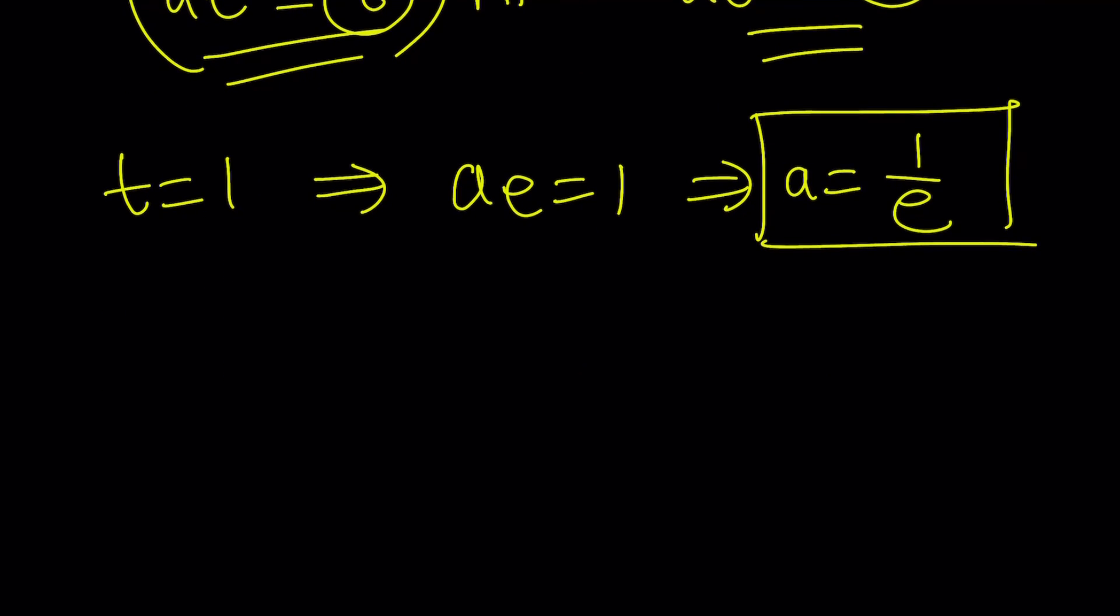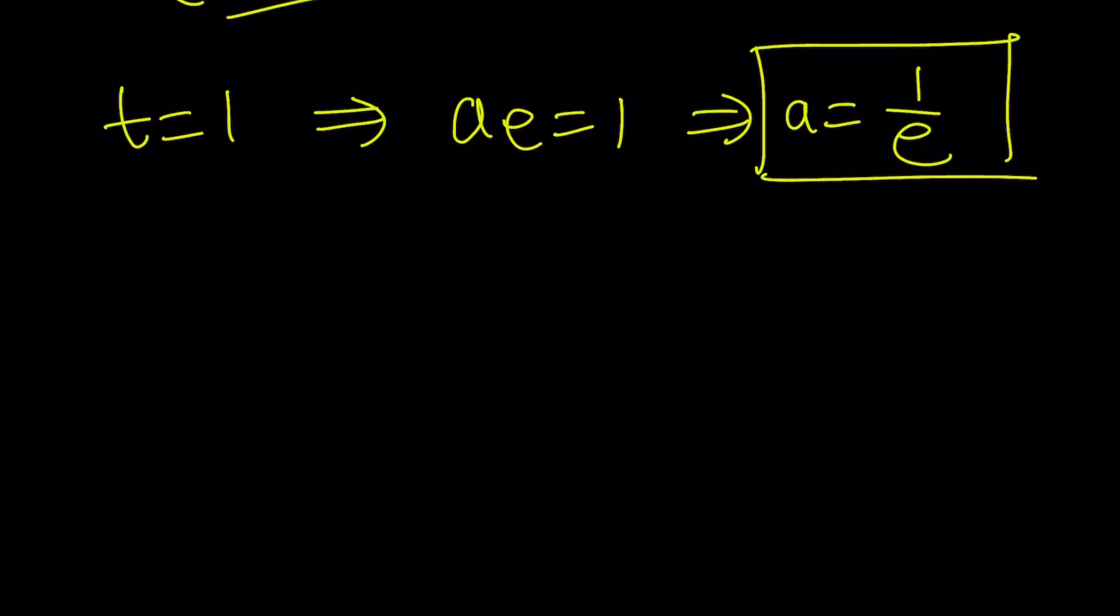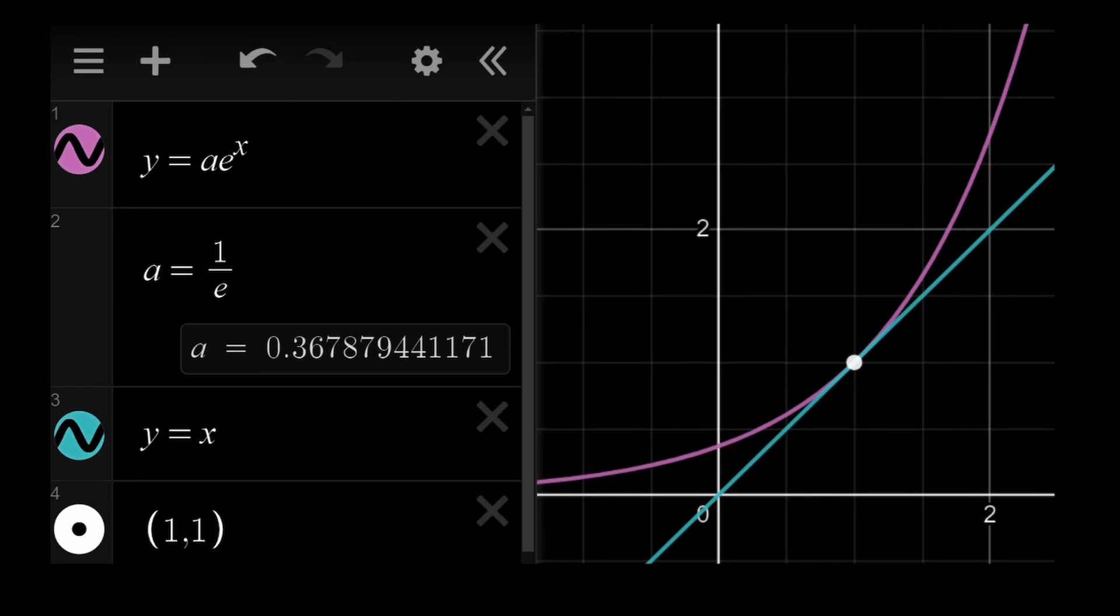So for a equals one over e, which is zero point three six, our graphs are going to be tangent. Let's go ahead and take a look at that scenario, because I gave you the graph of this here. So notice that these two graphs are tangent for a equals one over e. And they're going to be tangent at one comma one, because remember, the t value we found was one. So that is the point of tangency.